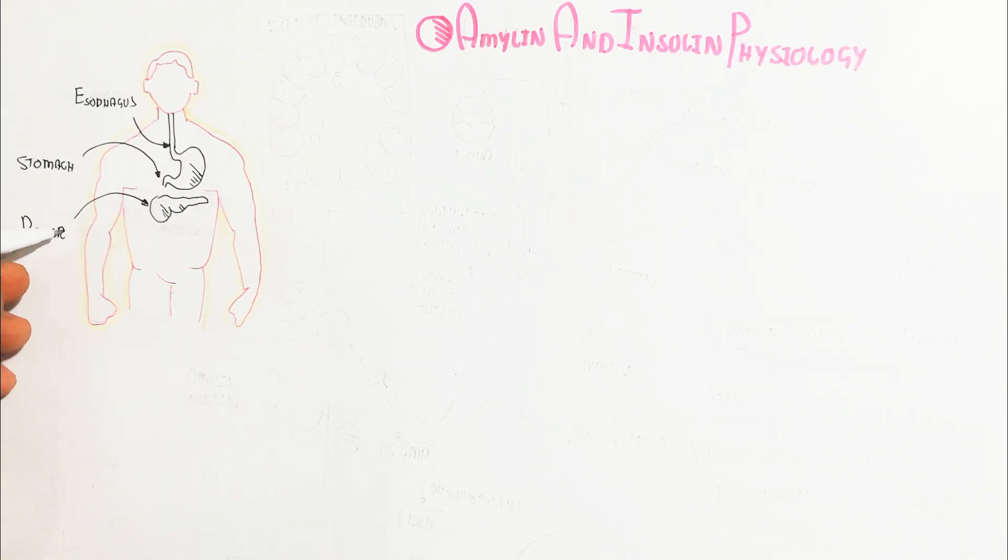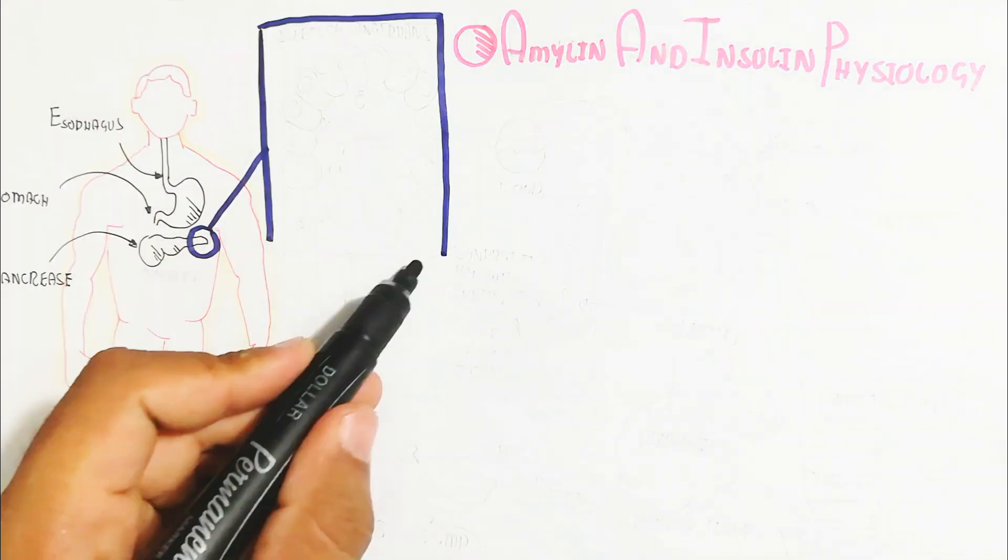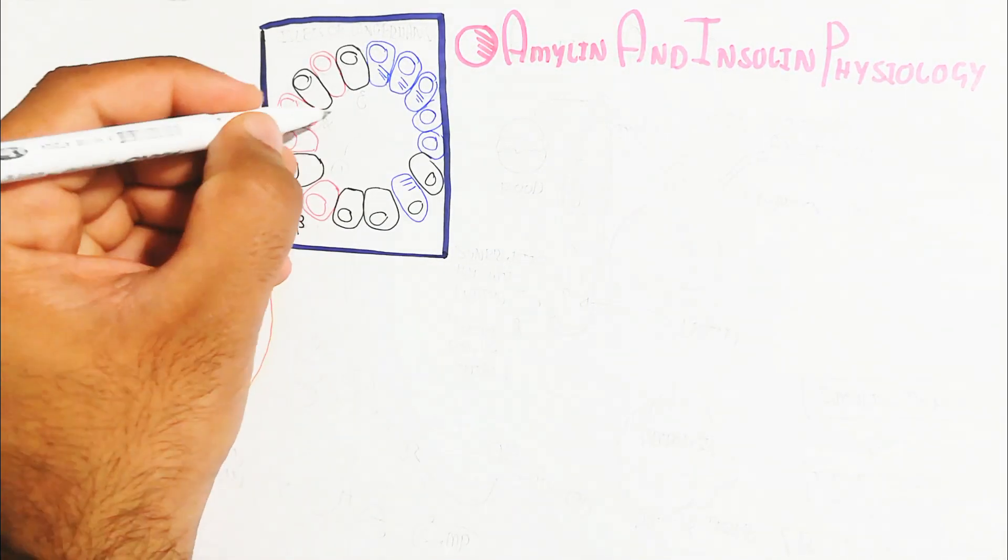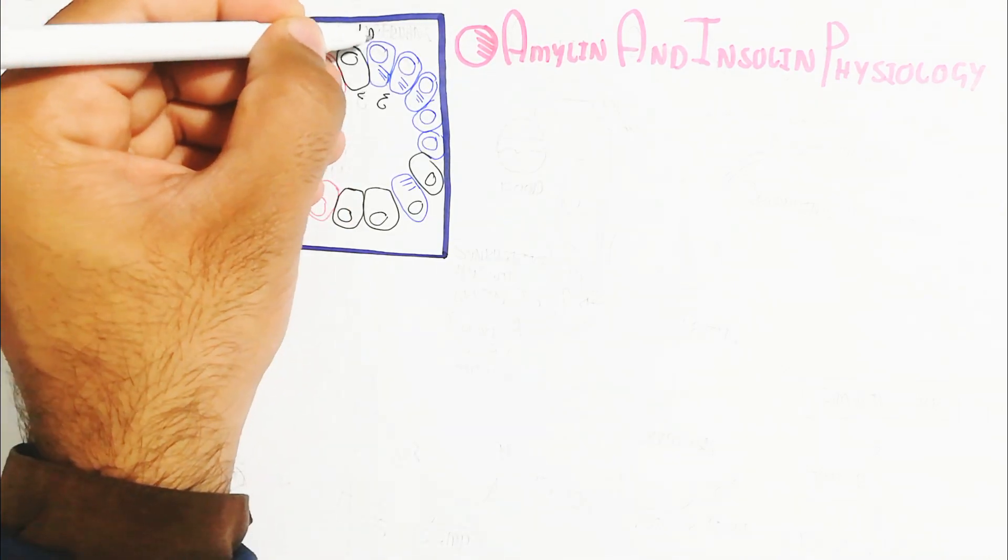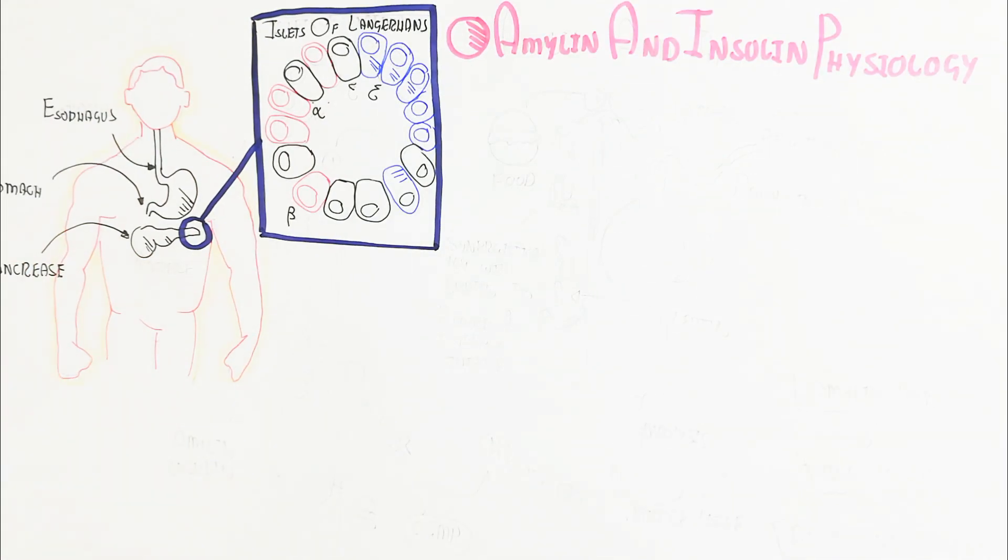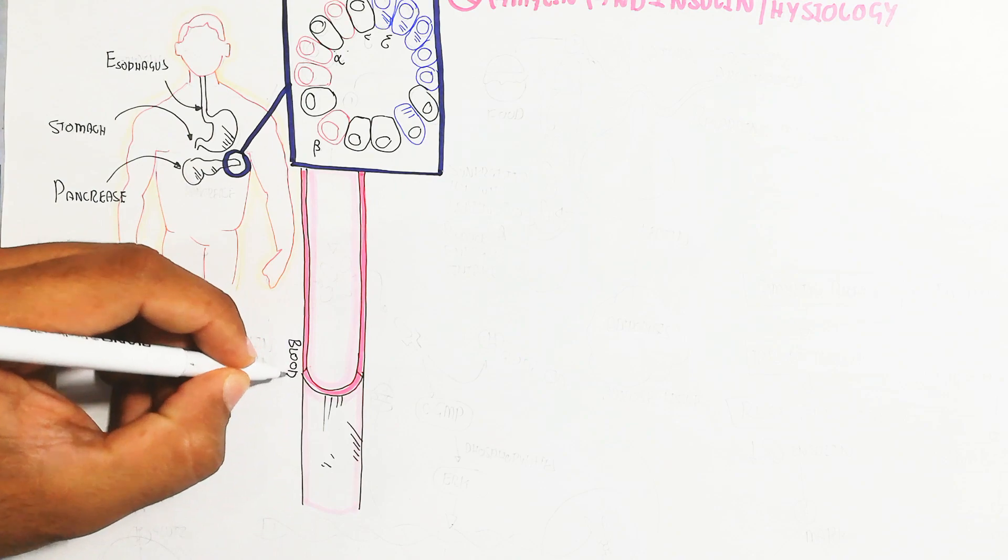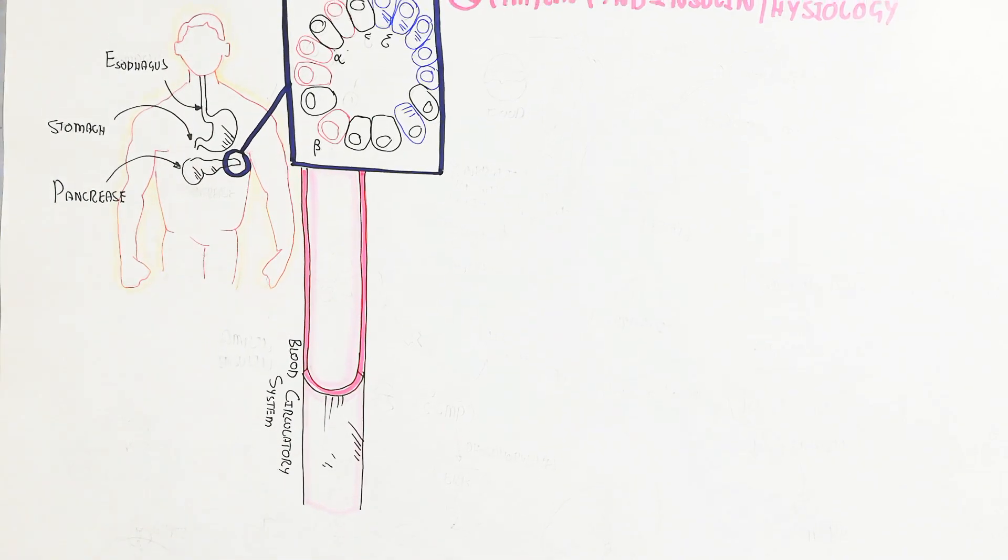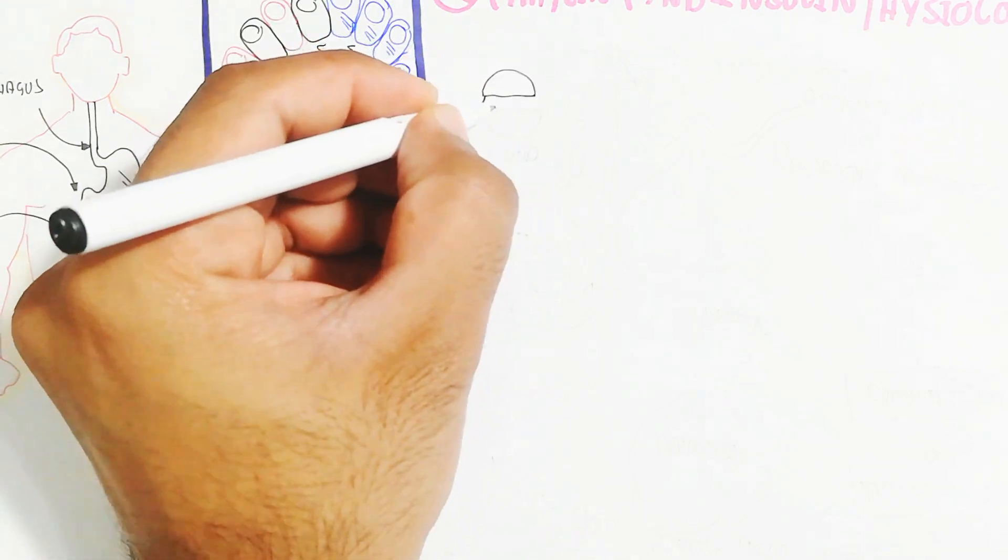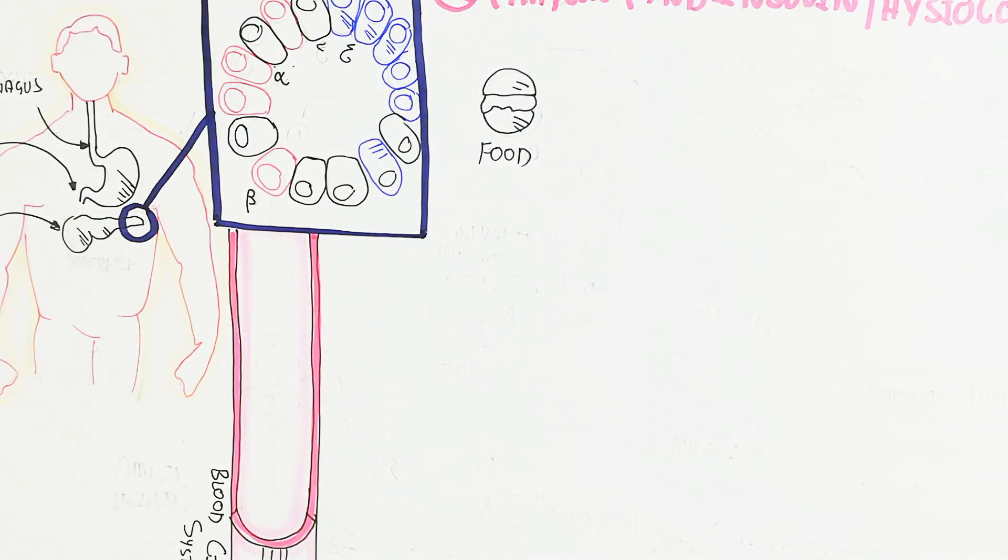Glucose and amino acids enter the blood circulatory system. The pancreas will respond to hyperglycemia in the blood. The pancreas contains islets of Langerhans with endocrine cells: beta, alpha, and delta. Beta cells are responsible for the production of amylin and insulin, which are produced together due to the food trigger.